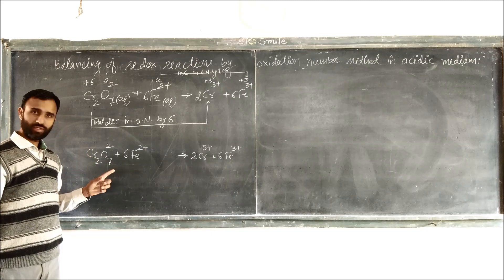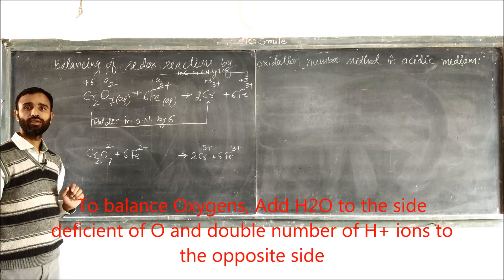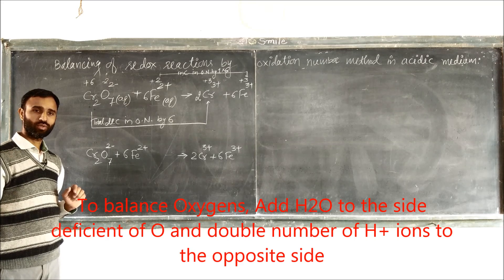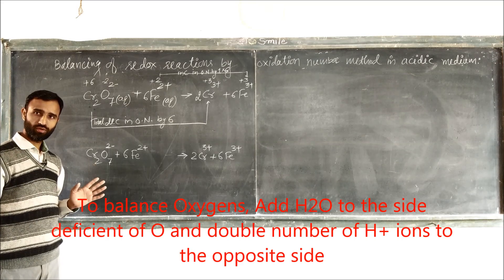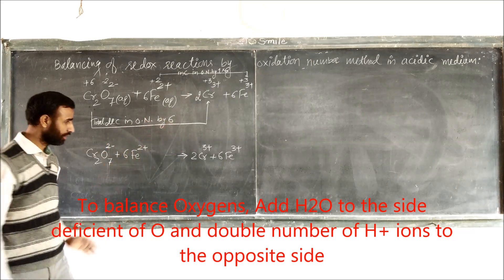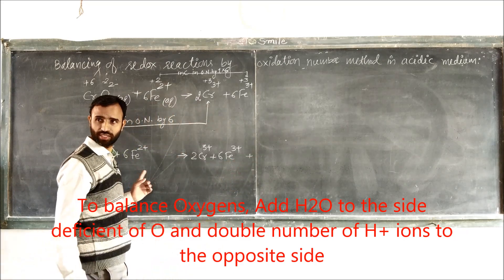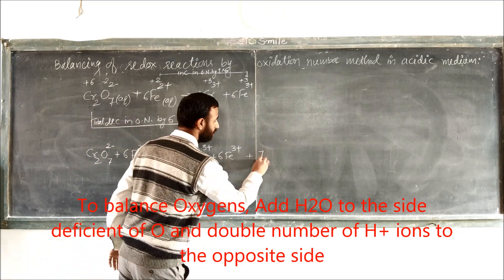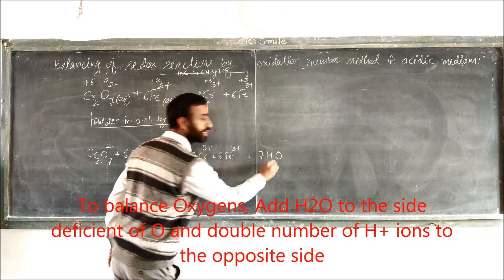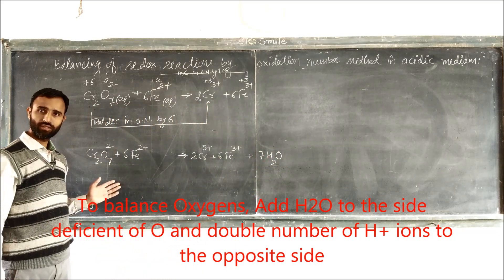Now, since the medium is acidic, what do we do? In acidic medium we add H₂O. On which side? On the side opposite to the oxygen deficit. There are 7 oxygens deficient, so we add 7 H₂O and 14 H⁺ on the opposite side.